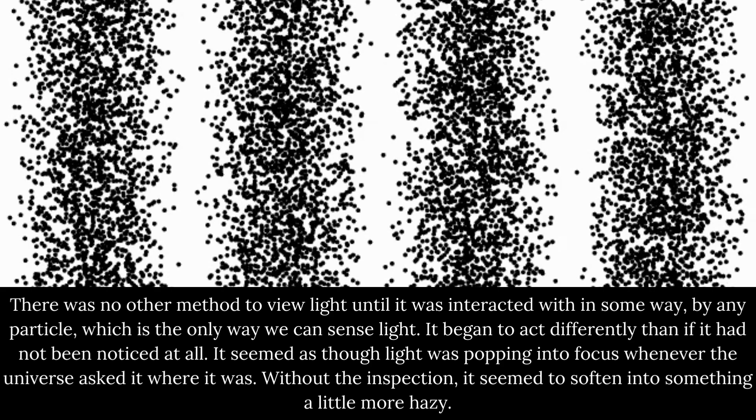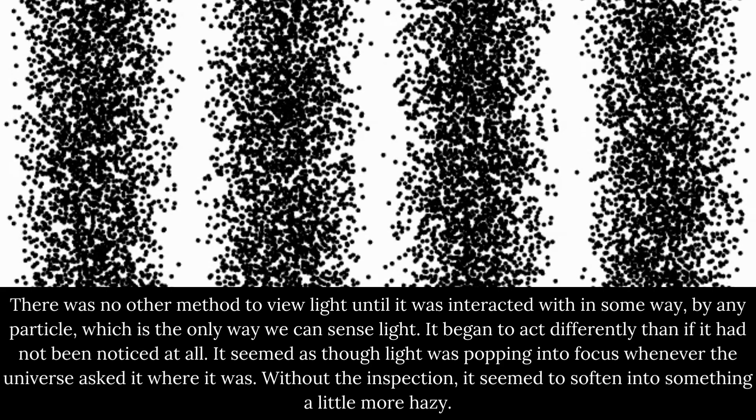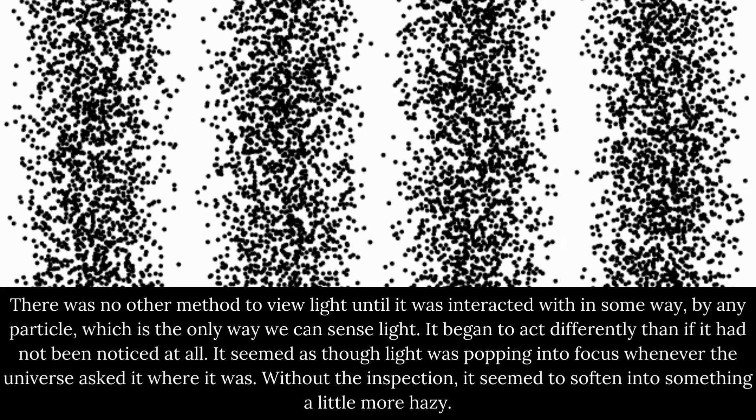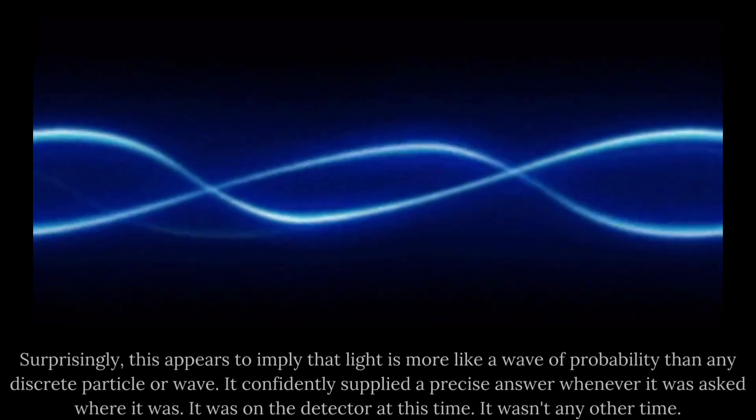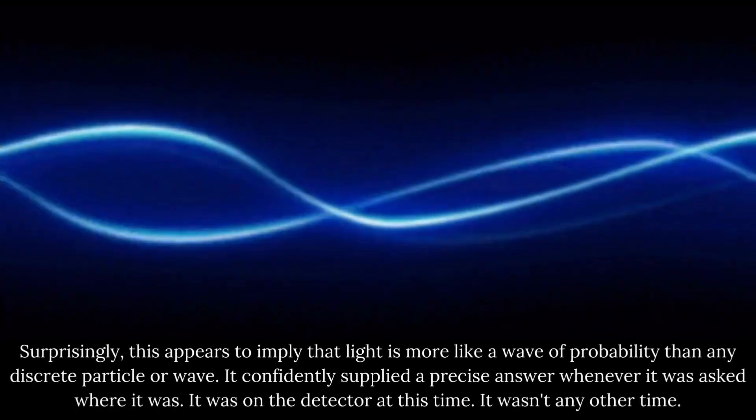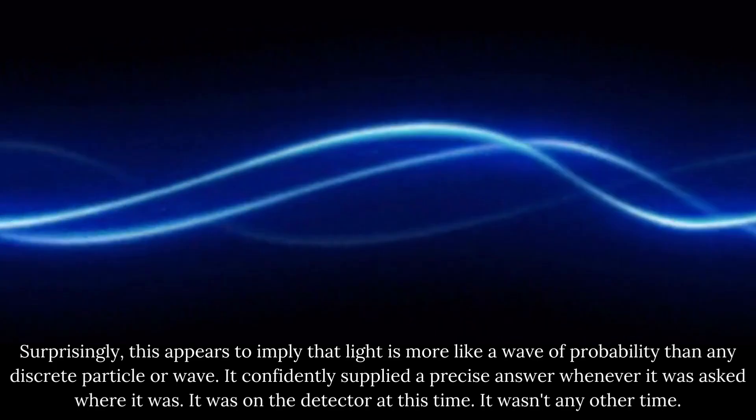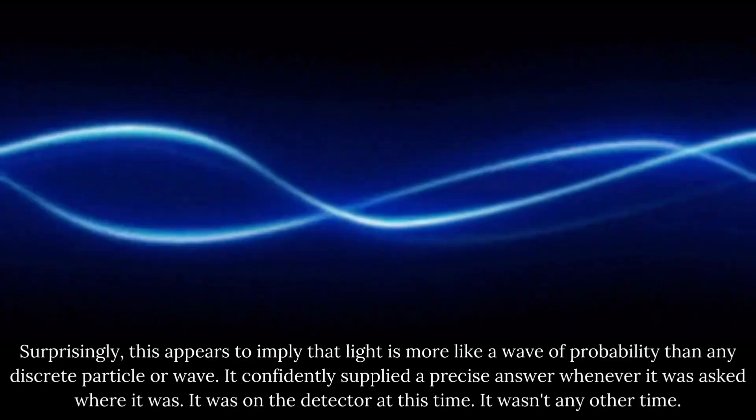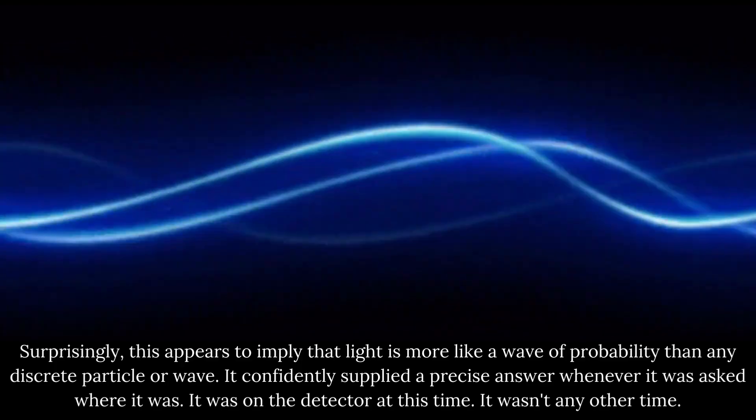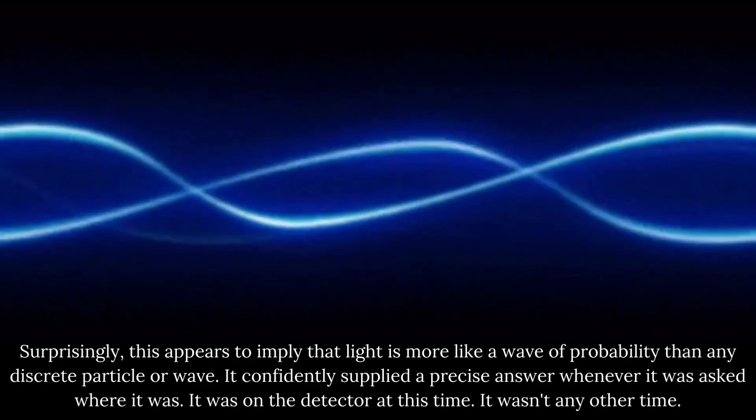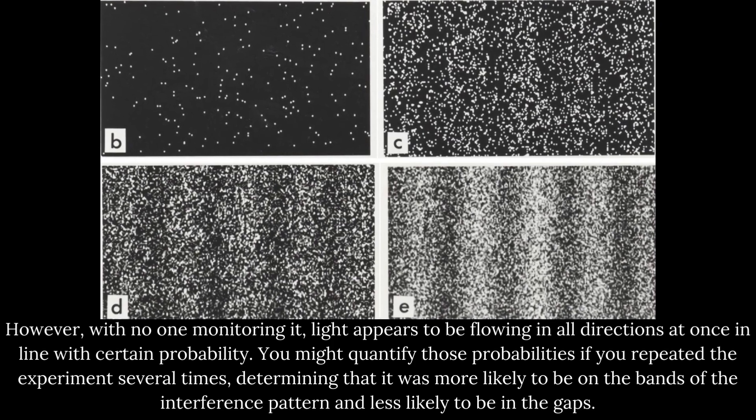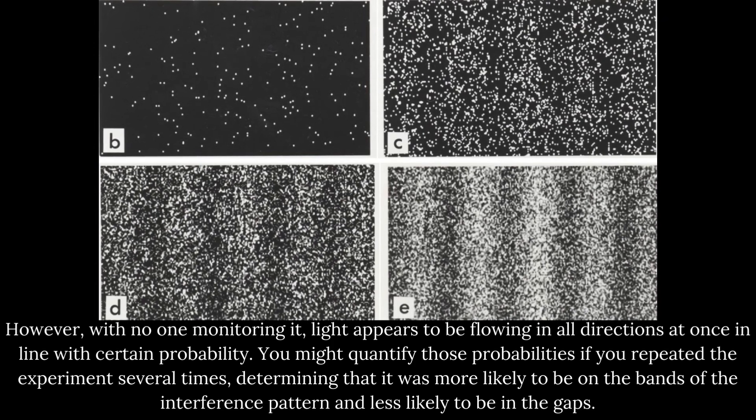It seemed as though light was popping into focus whenever the universe asked it where it was. Without the inspection, it seemed to soften into something a little more hazy. Surprisingly, this appears to imply that light is more like a wave of probability than any discrete particle or wave. It confidently supplied a precise answer whenever it was asked where it was. It was on the detector at this time. It wasn't any other time. However, with no one monitoring it, light appears to be flowing in all directions at once in line with certain probability.